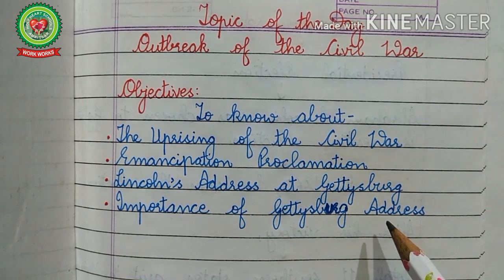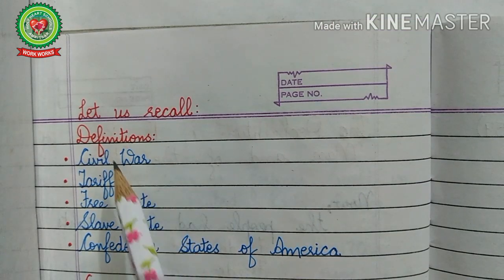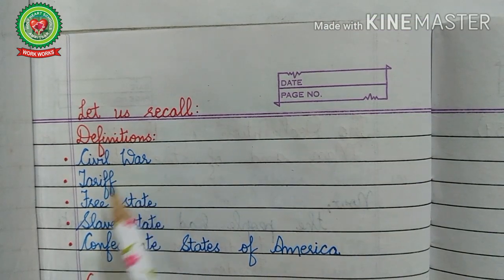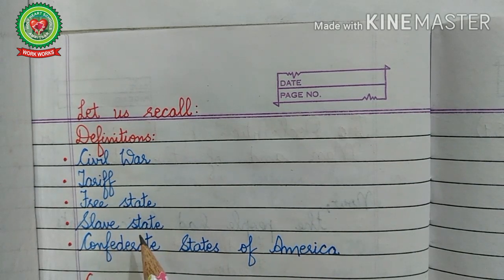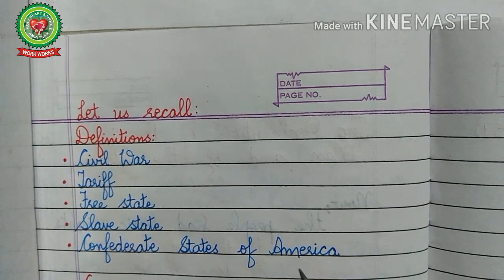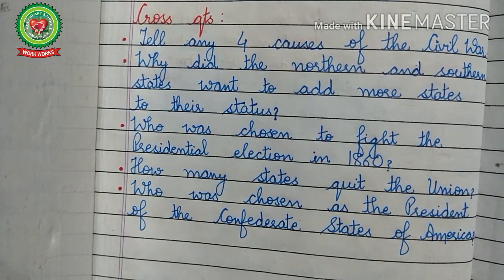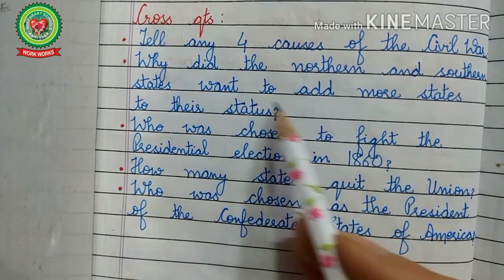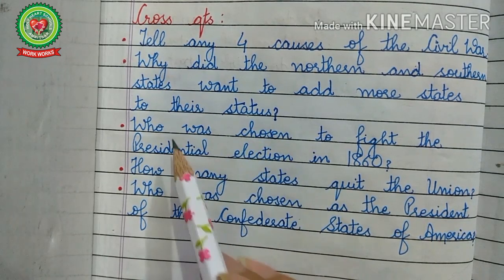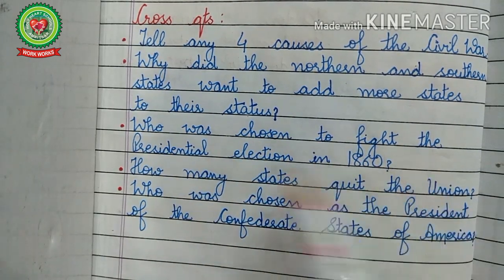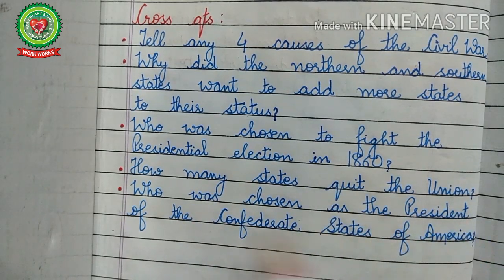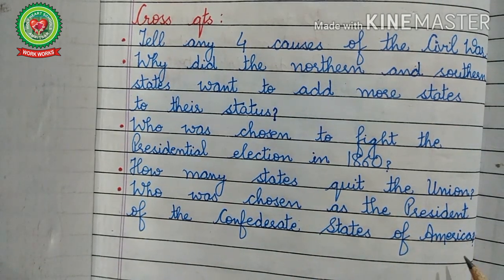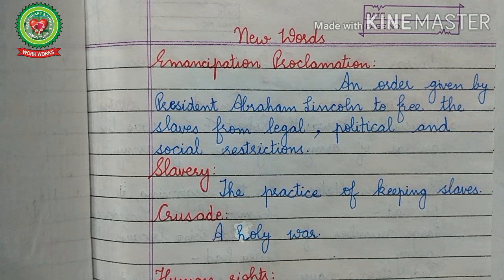Definitions to recall: civil war, tariff, free state, slave state, and Confederate States of America. Answer these cross questions: Tell any four causes of the Civil War. Why did the northern and southern states want to add more states to their status? Who was chosen to fight the presidential election in 1860? How many states quit the Union, and who was chosen as president of the Confederate States of America?